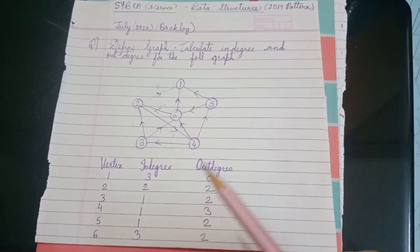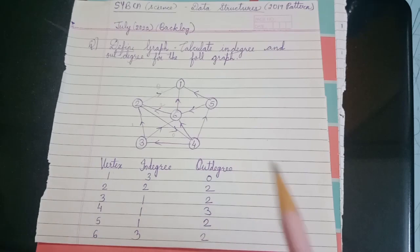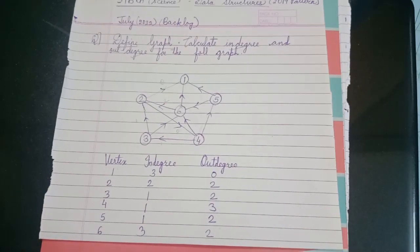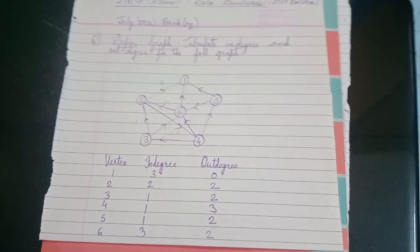Similarly, you have to calculate for vertices three, four, five, and six. This way you can calculate in-degrees and out-degrees for any graph. Stay tuned for more videos. Till then, like, share, and subscribe. Thank you.